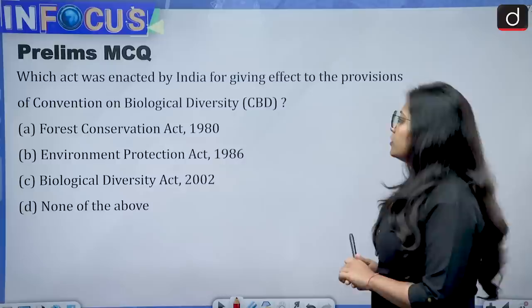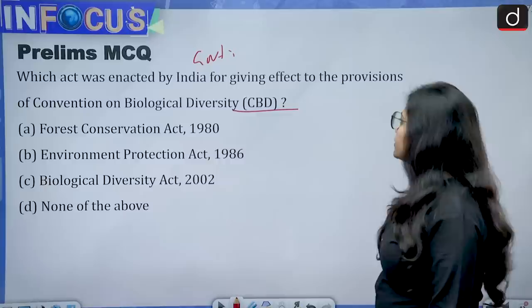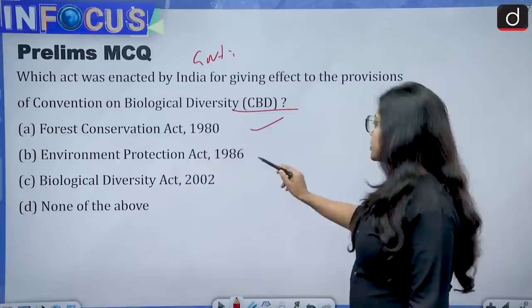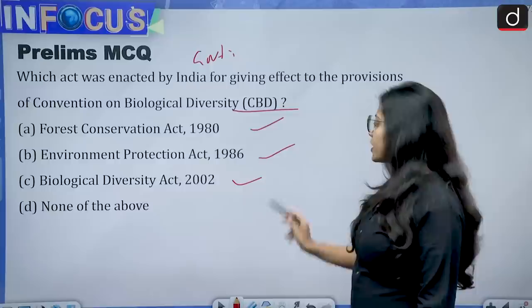Now it's time for the Prelims MCQ. Which act was enacted by the Indian government to give effect to the provisions of the Convention on Biological Diversity? Options: A — Forest Conservation Act 1980; B — Environment Protection Act 1986; C — Biological Diversity Act 2002; D — None of the above. Try to solve this question and send the answer in the comments. Thank you for watching — keep reading and keep writing!